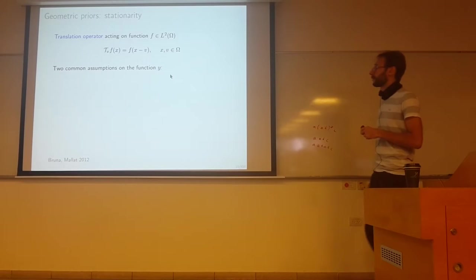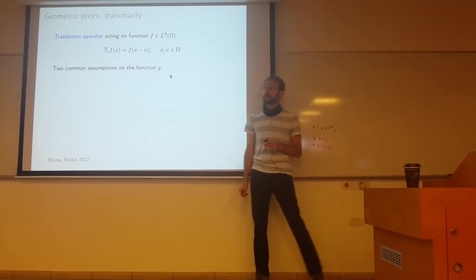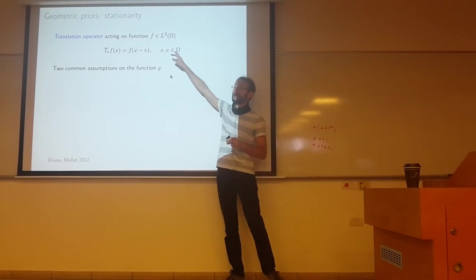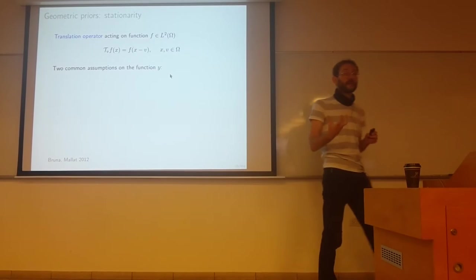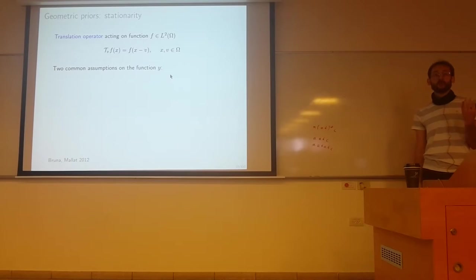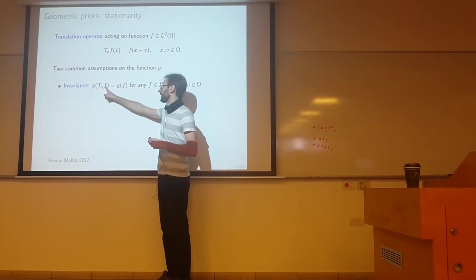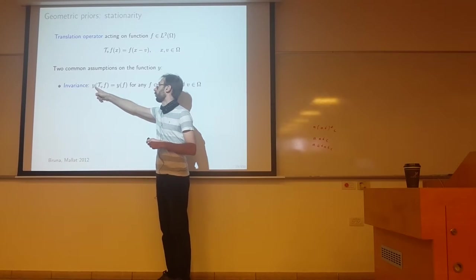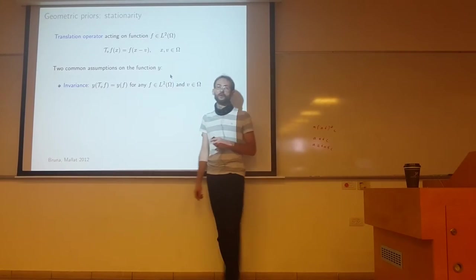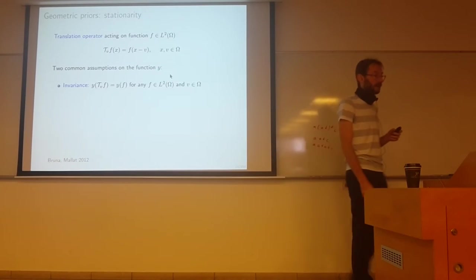The idea is the following. Assume you have a translation operator T_v that acts on your function. We have our domain omega - it's a vector space, we can translate functions on it. There are usually two assumptions on the functional y, the label function that we can make. First assumption is invariance: if I translate my function, I want the output of y to be the same as if I applied it to the original function. This is translation invariance.